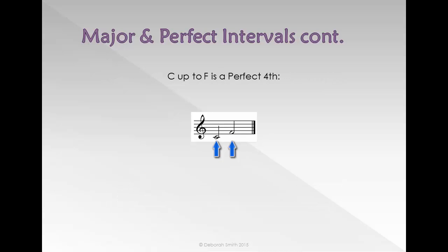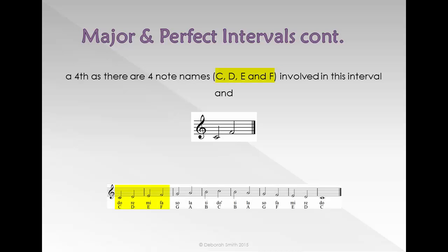C up to F is a perfect fourth as there are four note names C, D, E and F involved in this interval and F is the fourth note of the C major scale.